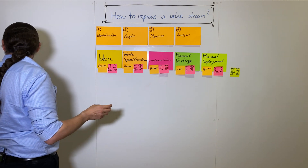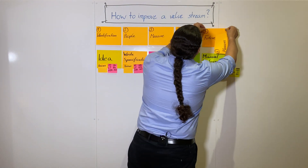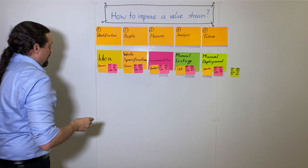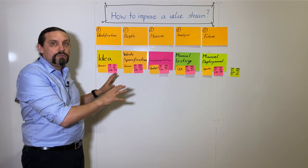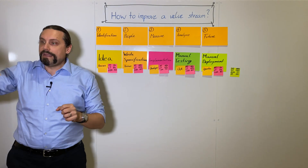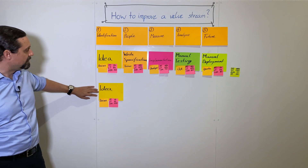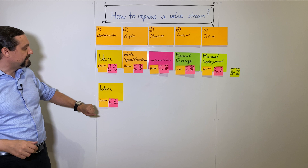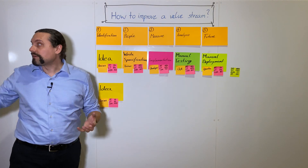When we have done that, we go into the fifth step, which is analyzing the future. In this step we are going to create a new target value stream. In this target value stream we still have the idea step, which is done by the business, but now with a process time of eight hours, lead time of eight hours, and a percentage completed accuracy of 100 percent. This is our target — where we want to be.